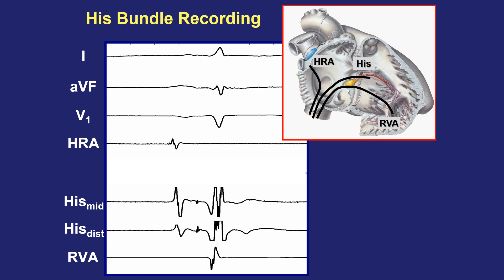Let's now analyze a multi-channel recording as simple as we can get in the EP lab. At the top are three surface EKG leads. A high right atrial catheter provides an electrogram near the sinus node. A quadrupolar His catheter displays the mid and distal pairs, showing atrial, His, and ventricular signals as reviewed. A catheter all the way down in the right ventricular apex shows a ventricular electrogram timing with the surface QRS.